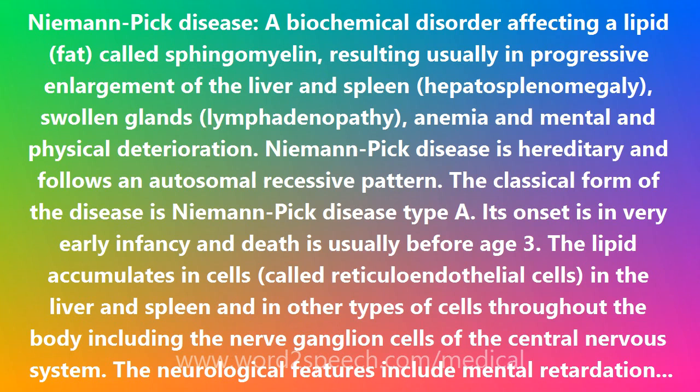At least five forms of Niemann-Pick disease have been distinguished: the classical infantile form type A, the visceral organ form type B, the subacute or juvenile form type C, the Nova Scotian variant type D, and the adult form type E.